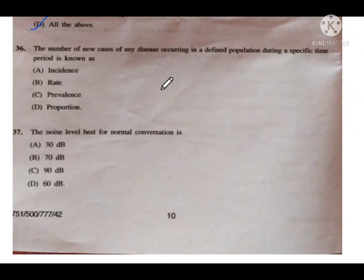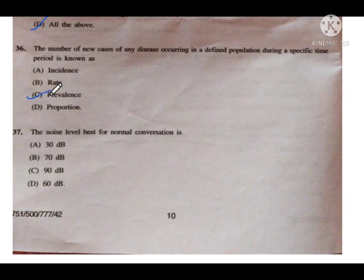Question number 36: The number of new cases of any disease occurring in a defined population during a specific time period is known as — option A is incidence, B is rate, C is prevalence, and D is proportion. Option C — prevalence — is the correct answer here. Note: incidence includes both old and new cases, while prevalence includes only new cases in a defined population at a specific time.